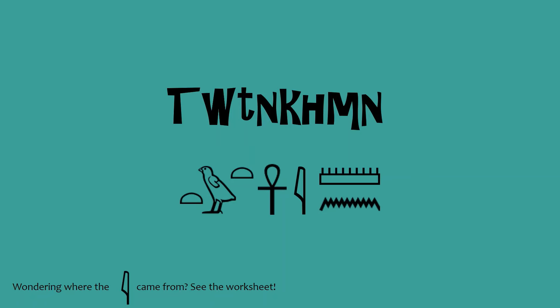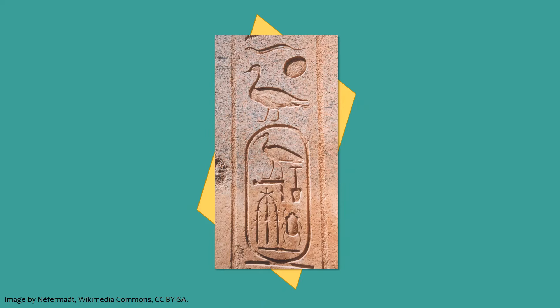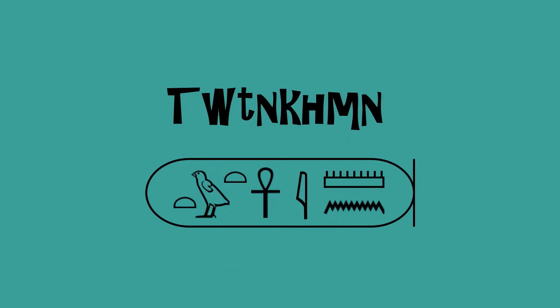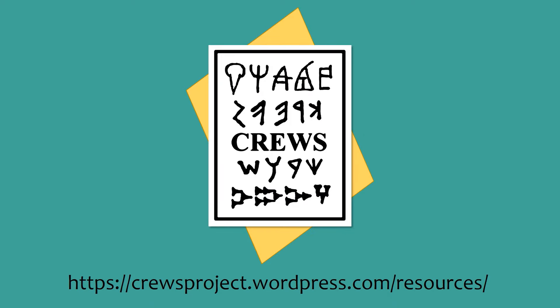Something the Egyptians liked to do was to put a ring round their king's names. This ring is called a cartouche, and it was a way of marking out their king's names as special. Here is a picture of the cartouche of the king Thutmose III. We can do that for Tutankhamun. I hope you've enjoyed learning about how to write in Egyptian hieroglyphs. Why not have a go at writing your own name by looking at the worksheet on the Cruz Project website, and perhaps even pretend you're an Egyptian king by putting a cartouche round your own name. We'll be back soon to look at another ancient writing system.